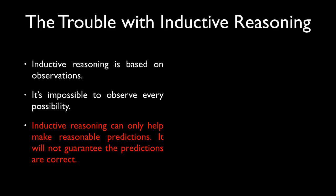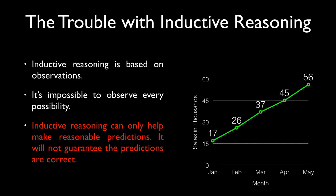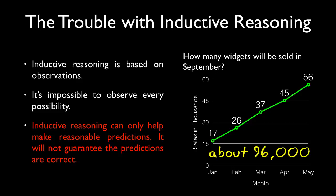Another instance when inductive reasoning doesn't work, let's go back to the widgets. But in this case, instead of just the next month or maybe two months ahead, let's go four months ahead, September. Well, if the pattern holds, we can predict that there will be about 96,000 widgets sold.